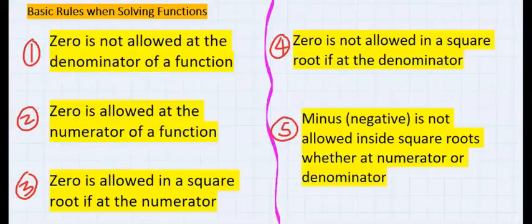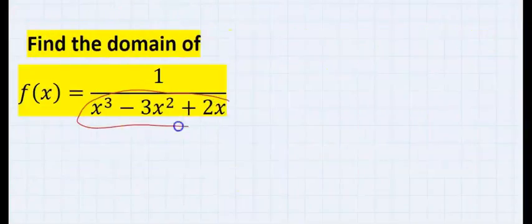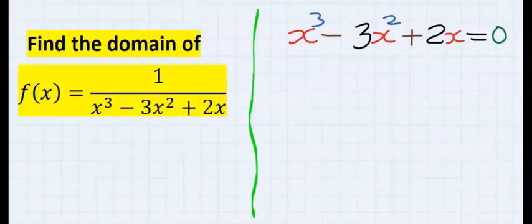With these rules in mind, we are going to solve for the denominator, and this solution must not be equal to 0. Next, consider that x is common in all of them. Hence, factorize x out.